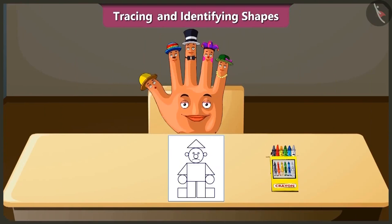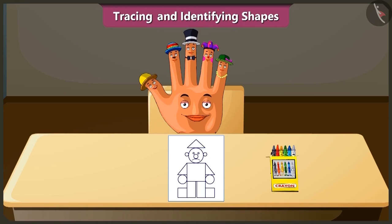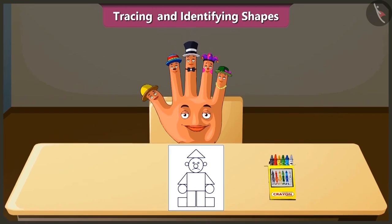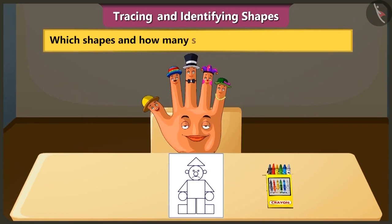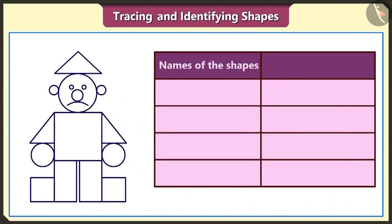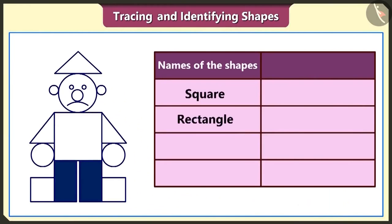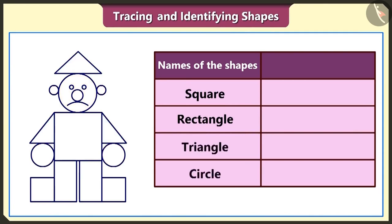Hello friends! Look — this is a picture of a doll made using shapes. But why is this doll sad? Because the doll wants to know which shapes and how many shapes are used in his making. The square, the rectangle, triangle and circle are used to make this doll.